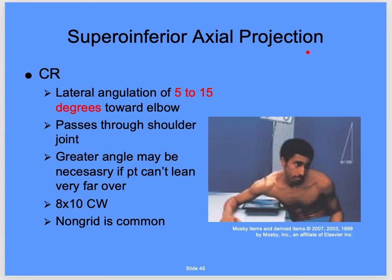The superior inferior axial projection uses a lateral angulation — off to the lateral side, not cephalad or caudad. It's 5 to 15 degrees towards the elbow, passing through the shoulder joint. A greater angle may be necessary if the patient can't lean very far over. An 8x10 crosswise non-grid is common. The more they can lean, the less OID; the less they lean, the more OID.